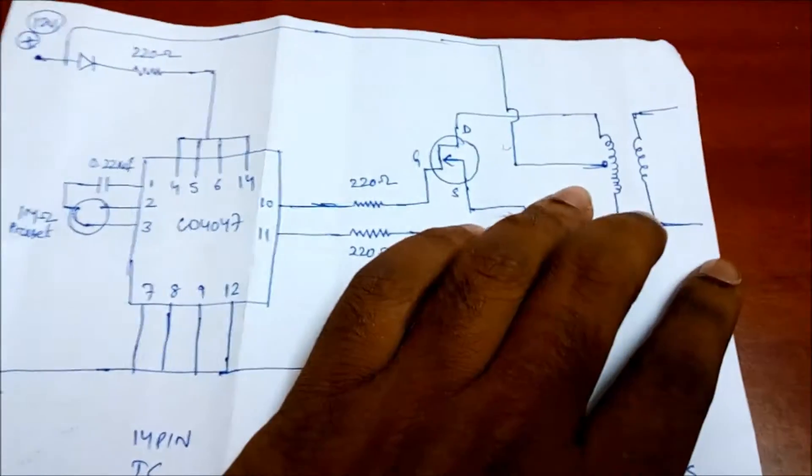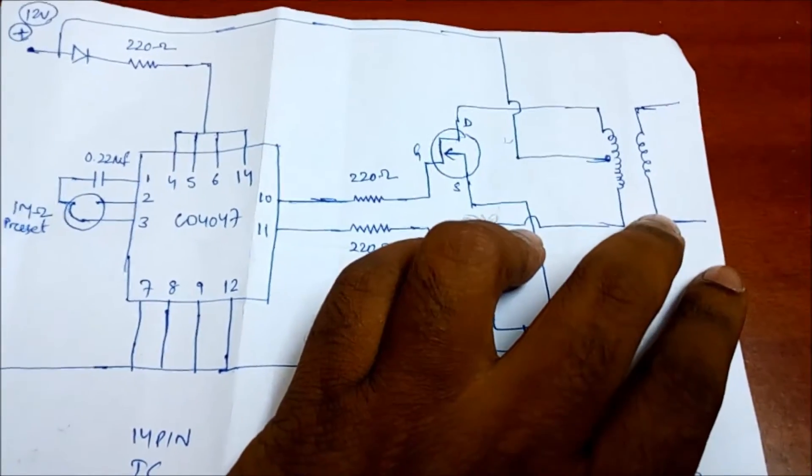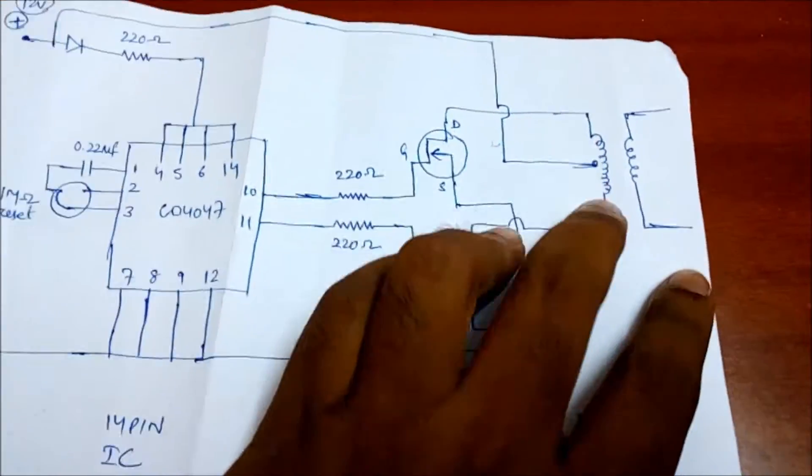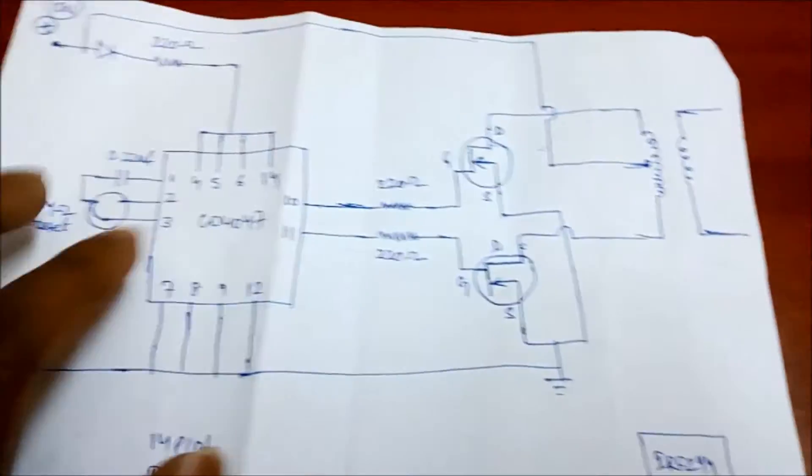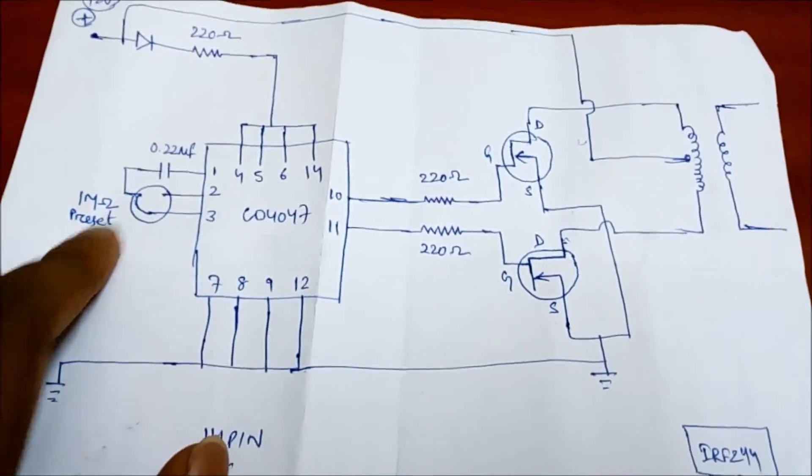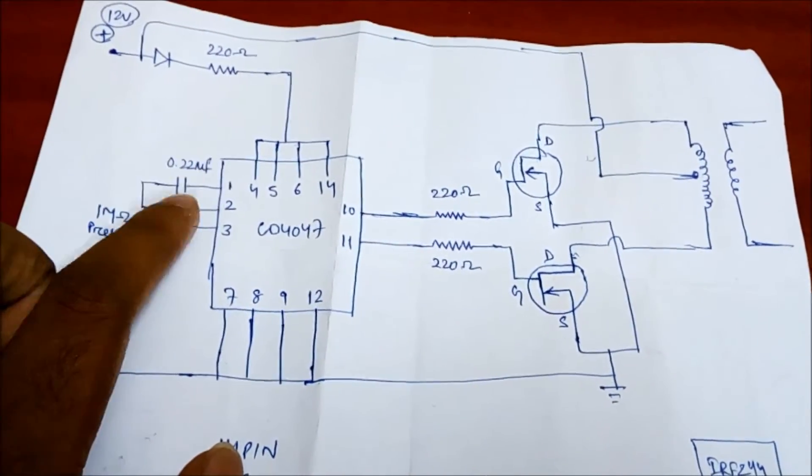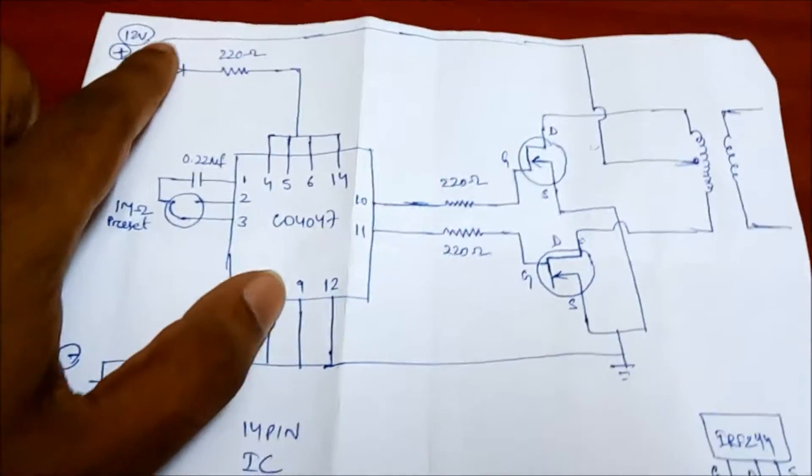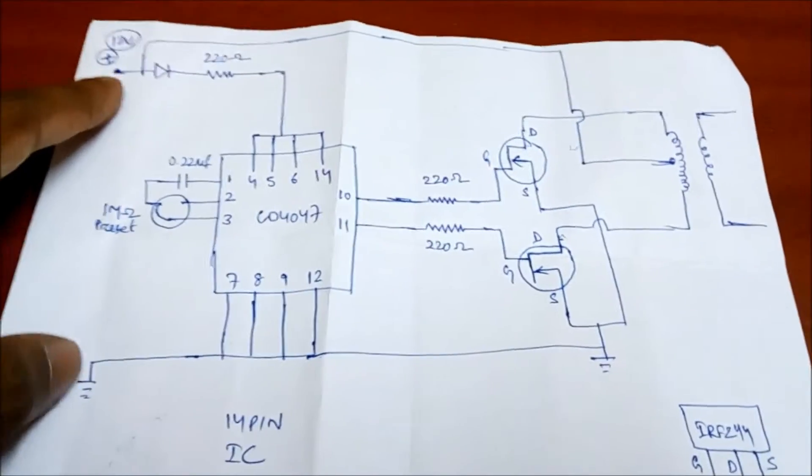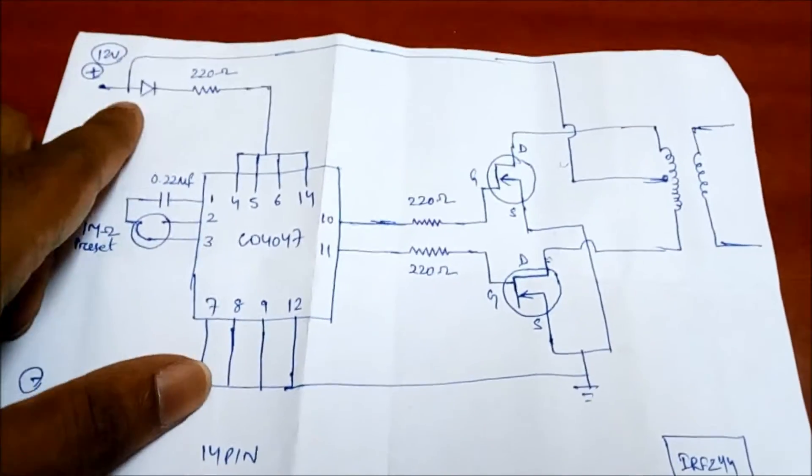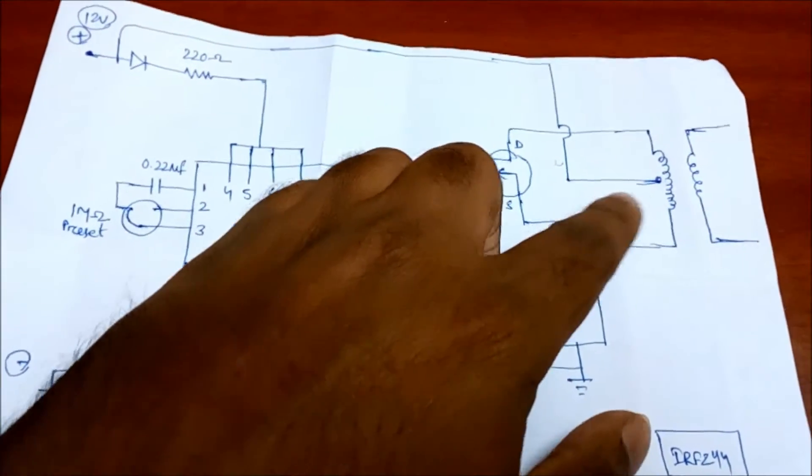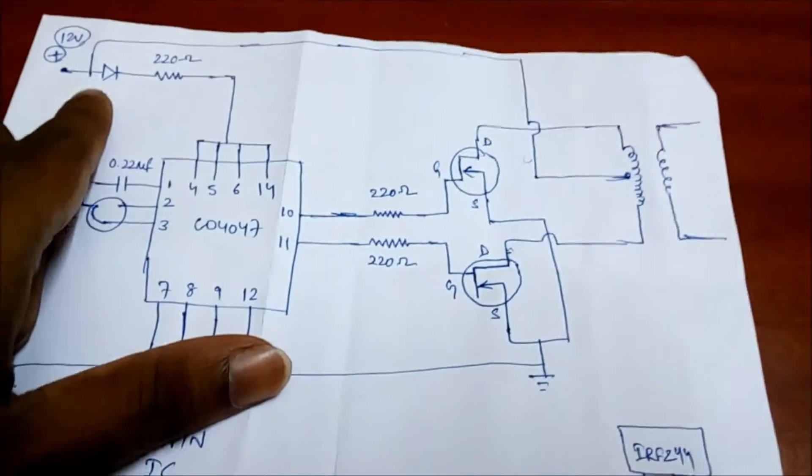Two MOSFETs, your step-down transformer or center-tap step-down transformer. I just reverse it, and in the secondary side I give the input, and in primary side I will take the output. And here is a 1-megahertz preset, 0.22-microfarad capacitor, and your diode and resistors. In this part, you have to give the positive battery supply, and in the center-tap transformer, the center point is connected with the positive end of your battery. Let's see the circuit first.